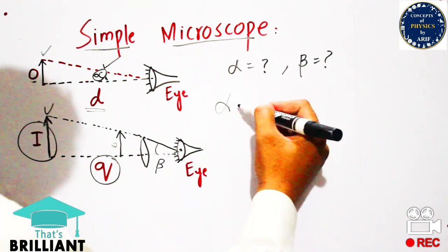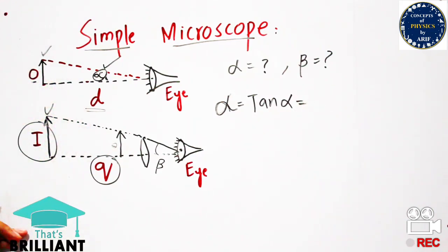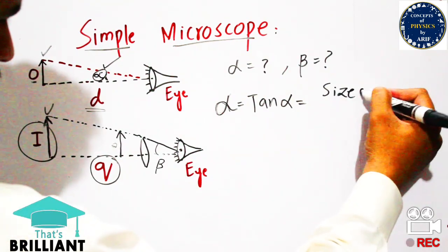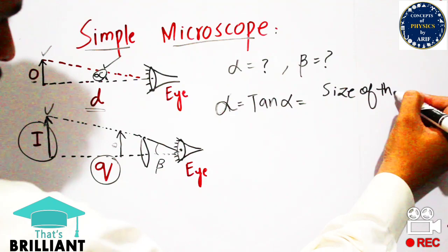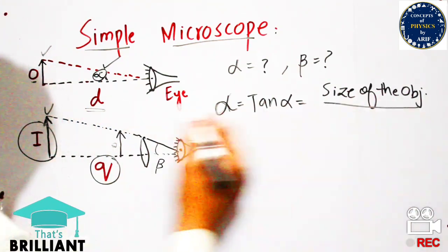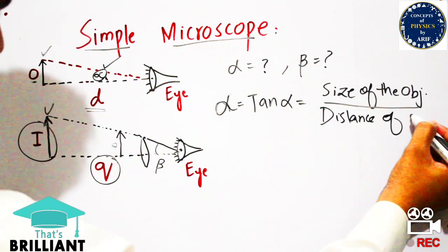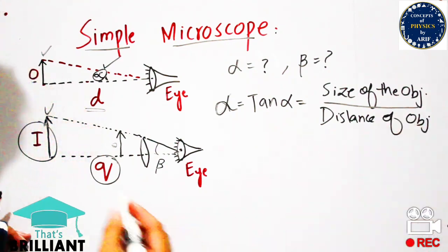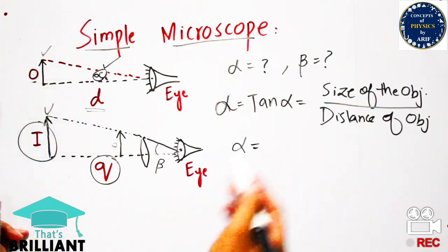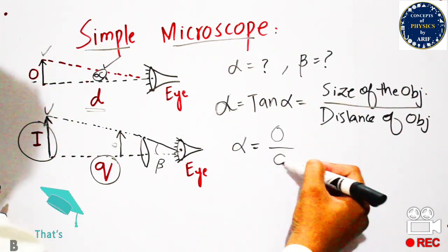Similarly, tan beta is also approximately equal to beta. Using the tan formula — perpendicular over base of a right triangle — alpha equals tan alpha, which equals the size of the object O divided by the distance of the object D. So alpha = O/D.